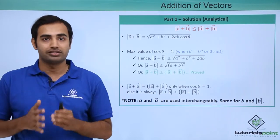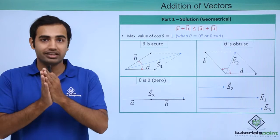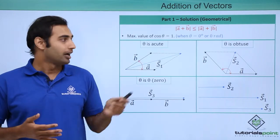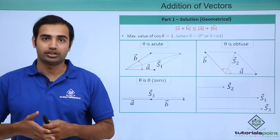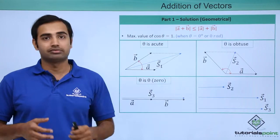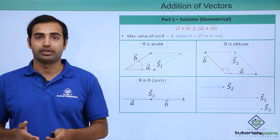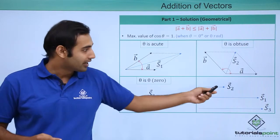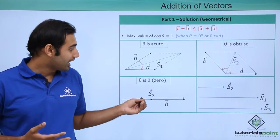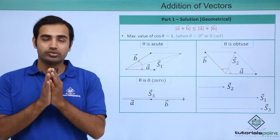This idea becomes clearer when visualized geometrically. I have two vectors A and B and I change the angle between them from 0 to acute to obtuse. With an acute angle, S1 is the resultant; with an obtuse angle, S2 is the resultant; and with the angle at 0 radians, S3 is the resultant. Placing all three vectors side by side, S3 is clearly the longest, confirming that the sum value is maximum when the angle is 0 degrees and lesser for all other angle values.